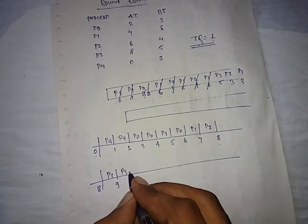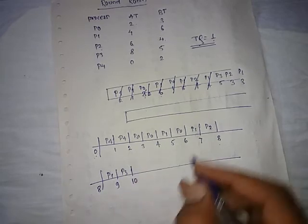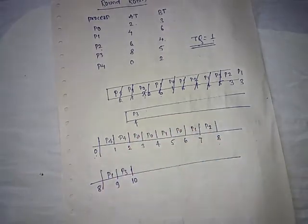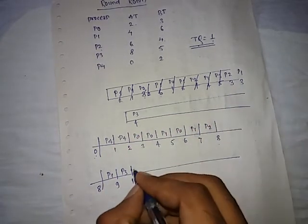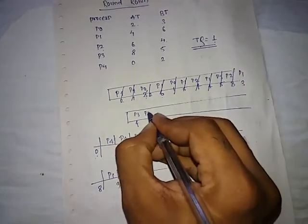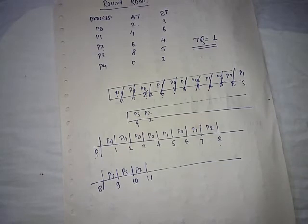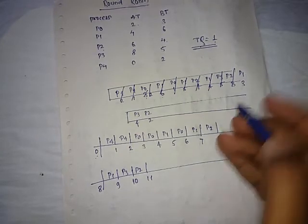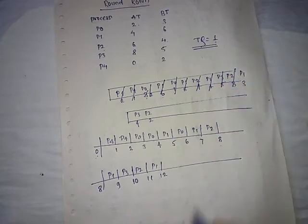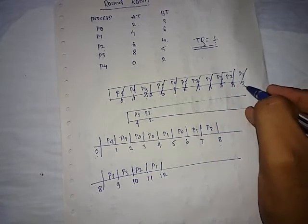My queue ends here, so I am writing here down. Next process is P3, so P3 is there. P3 for one, that becomes ten. P3 goes and P3 stays here for four.